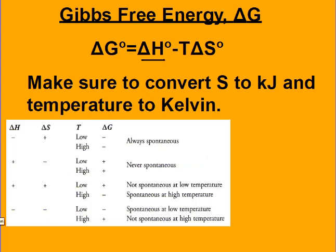Delta G takes into account delta H and delta S: delta G equals delta H minus T times delta S. For delta S, make sure that you convert your joules to kilojoules, and temperature must be in Kelvin. Then delta G will be in kilojoules.